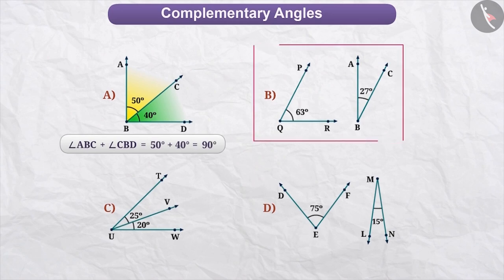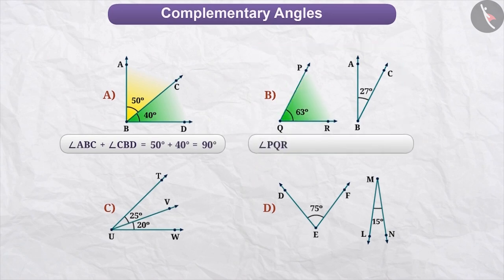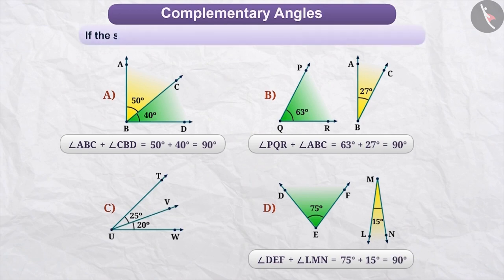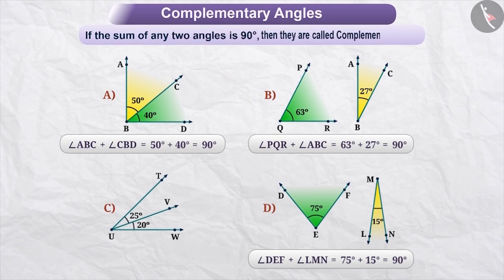In figure B, angle PQR plus angle ABC is equal to 63 degrees plus 27 degrees, which is equal to 90 degrees. Similarly, in figure D, angle DEF plus angle LMN is equal to 75 degrees plus 15 degrees, which is equal to 90 degrees. In this way, if the sum of any two angles is 90 degrees, then they are called complementary angles of each other.